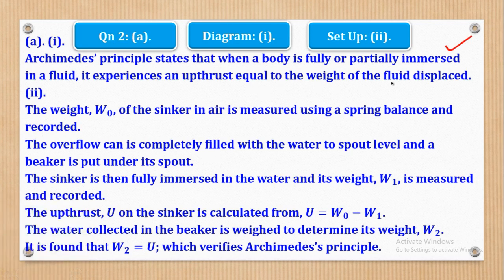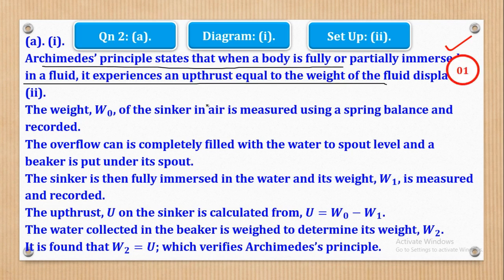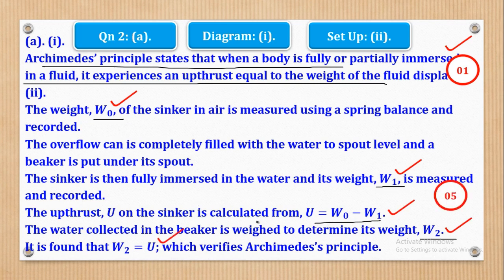For marking: if the principle statement is entirely correct, you get your full mark. In the experiment, one mark is for the weight of the sinker in air, another for the weight of the sinker in liquid, then marks for calculating the upthrust, determining the weight of liquid displaced, and finally comparing and concluding. That's how the five marks come about.